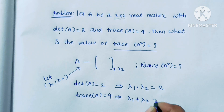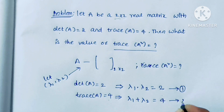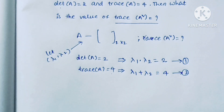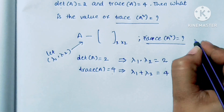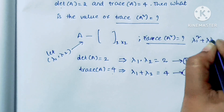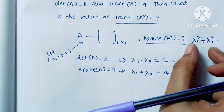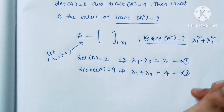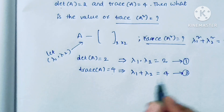So trace of A square means lambda 1 square plus lambda 2 square, which is the sum of the eigenvalues of the A square matrix. That is what they are asking us to find.